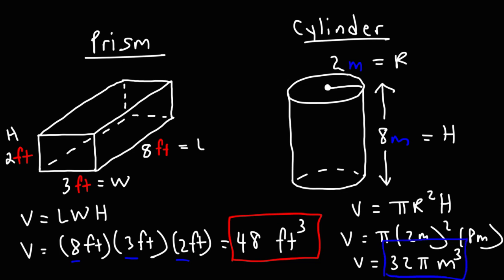Now for those of you who want a rounded answer, if you plug in pi into your calculator, you get 3.14159. If you multiply that by 32, we can say that the volume is approximately 100.5 cubic meters.